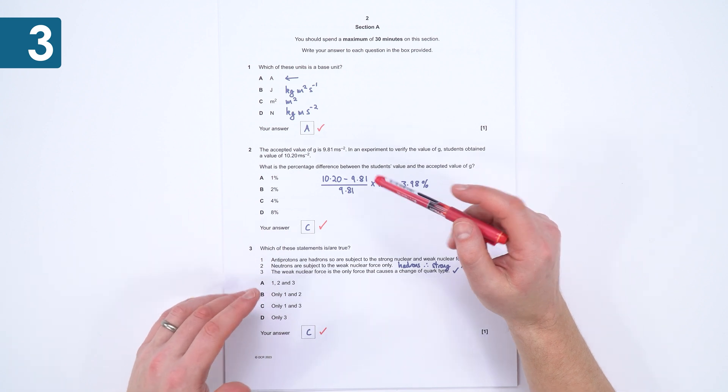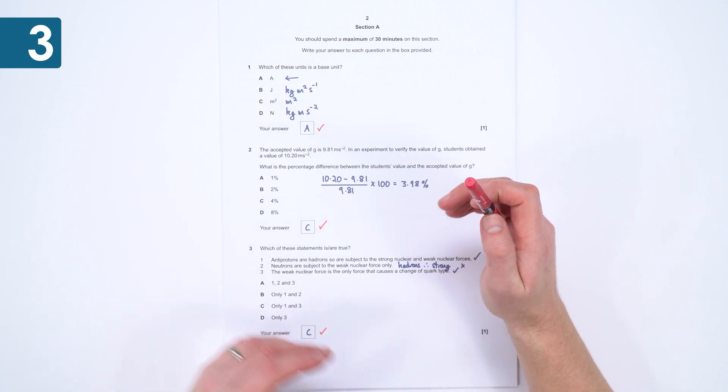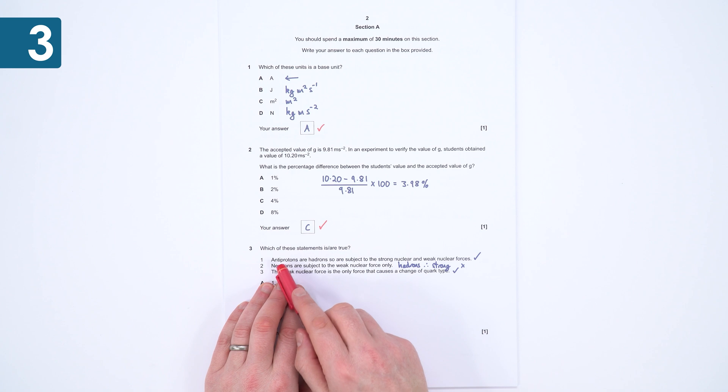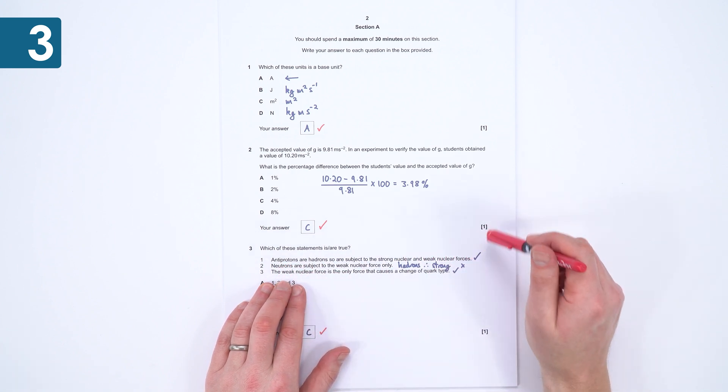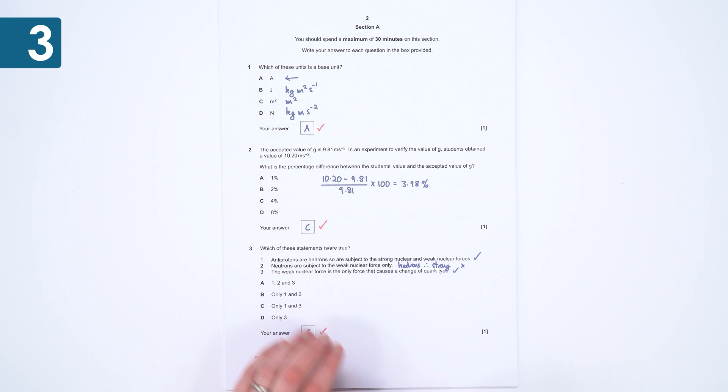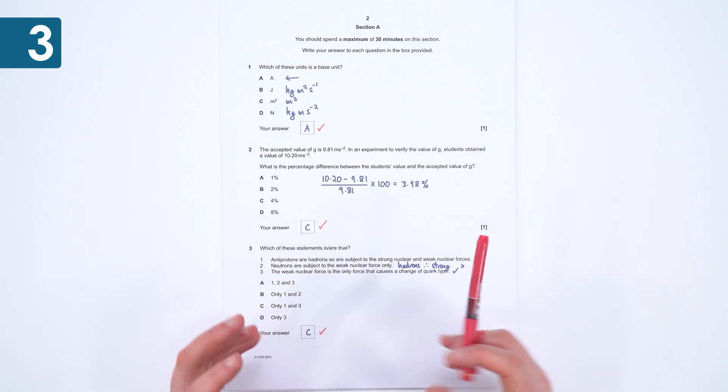Now when there are questions where you've got to look at which ones are true or not, I would say don't look at the answers first of all, just look at each statement, and if you agree with it, tick it, and put a cross if you don't agree. So we've got the first one, which is true. Neutrons are subject to the weak nuclear force only. That's not true because neutrons are hadrons, and therefore there's a strong interaction, the strong force that they experience. That one there is C.